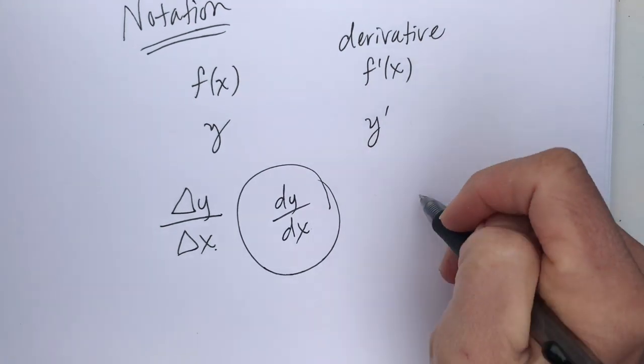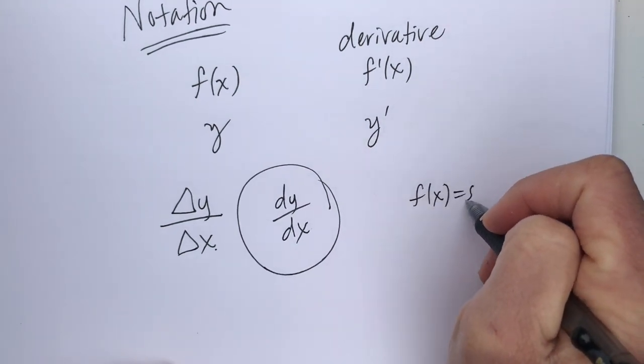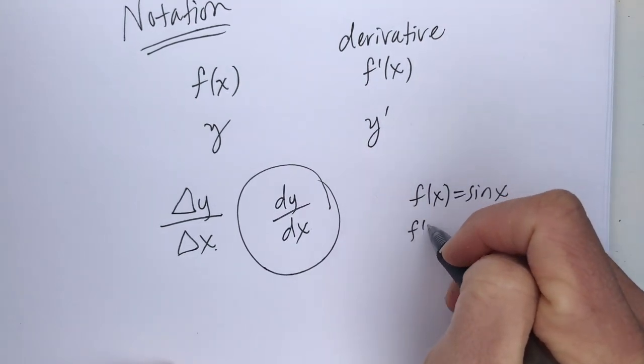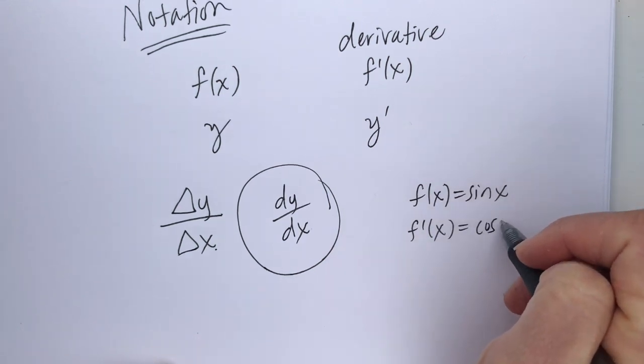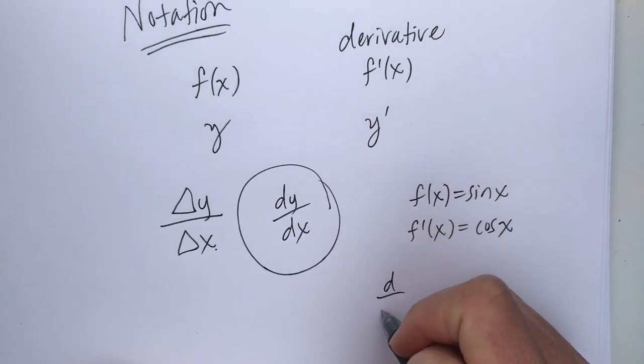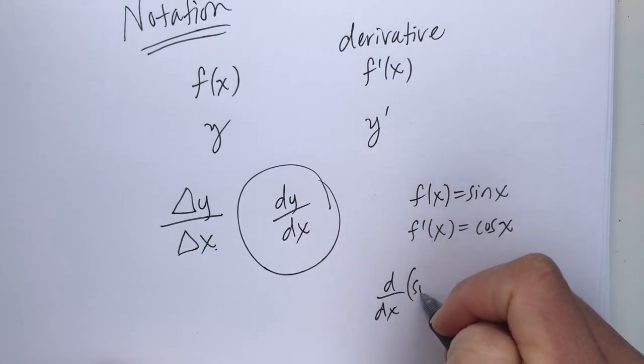So, what I mean by that, I can have f of x equals sine x and say f prime of x equals cosine x. Using the differential, what we say is d dx of sine x.